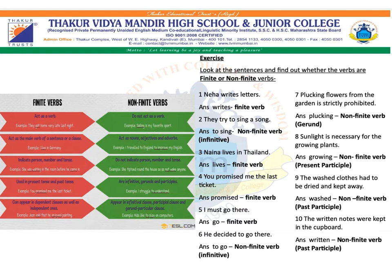The second one is participle. A participle is a verbal adjective. It does the work of a verb as well as an adjective. There are two kinds of participles: one is the present participle, and it ends with '-ing'; and the second one is a past participle, which ends with '-ed', '-en', or '-t'. The third non-finite verb is a gerund, and a gerund is a verbal noun. It ends with '-ing'. It's a verbal noun because it does the work of a verb as well as a noun.